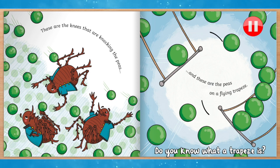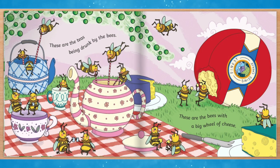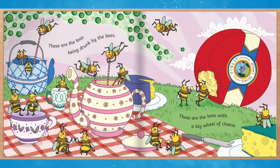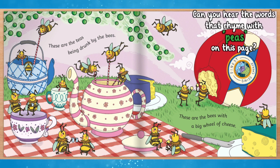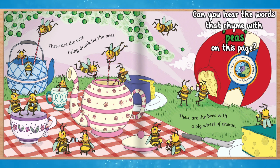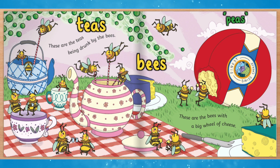Do you know what a trapeze is? These are the bees with a big wheel of cheese. Can you hear the words that rhyme with peas on this page? That's right! Tees, bees and cheese.